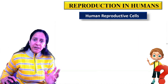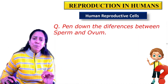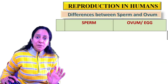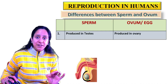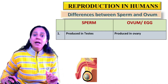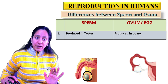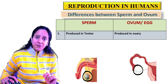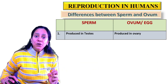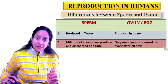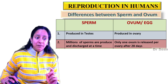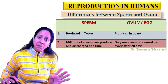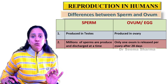If the question is to pen down the differences between sperm and ovum, let me tell you how to proceed. First, sperms are produced in testes in the male reproductive system, whereas ovum or egg is produced in ovaries in the female reproductive system. Talking about number, millions of sperms are produced and discharged at a time, whereas only one ovum is released by one of the ovaries after 28 days.